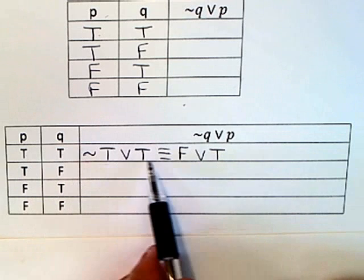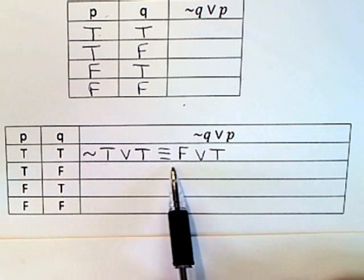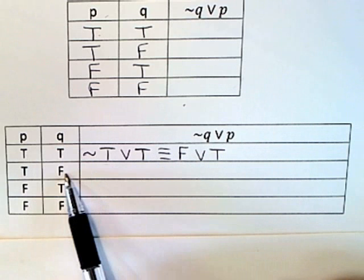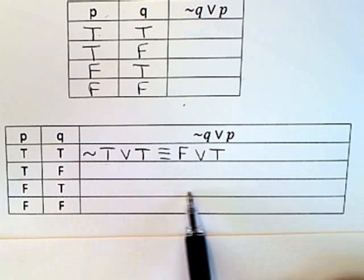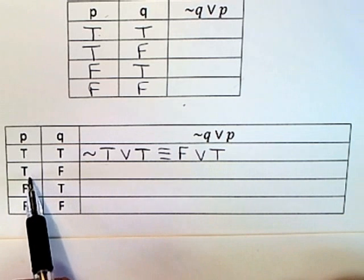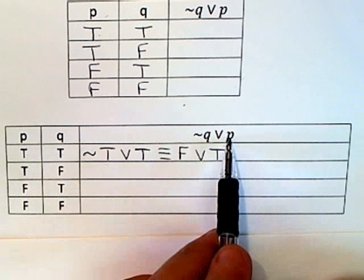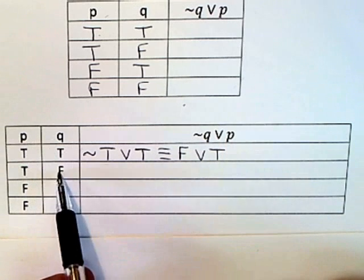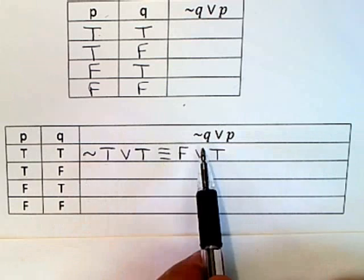And I can do that with each of those so I can continue this. So now I'll move to the possibility of P being true, in other words T goes here, and Q being false so an F would go here again. They're out of alphabetical order over here so you've got to be really careful.